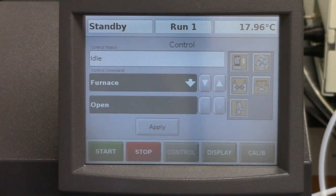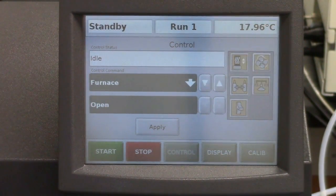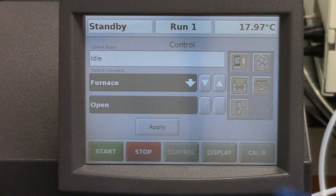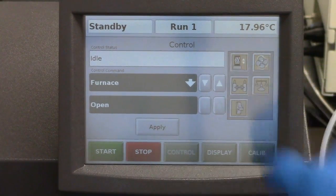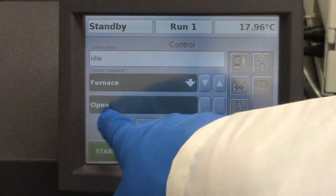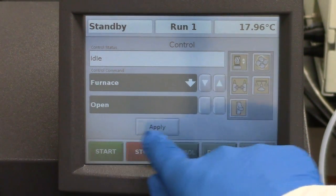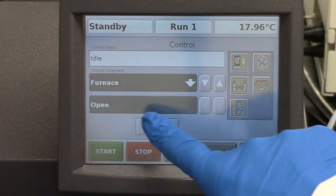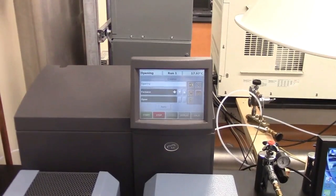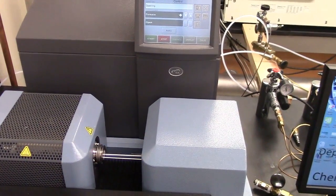Here is the control screen for the TGA instrument. What we'll need to do now is open the furnace. To do that, you simply press that button there, and then see here it says open. So we want the furnace to open. Hit apply.